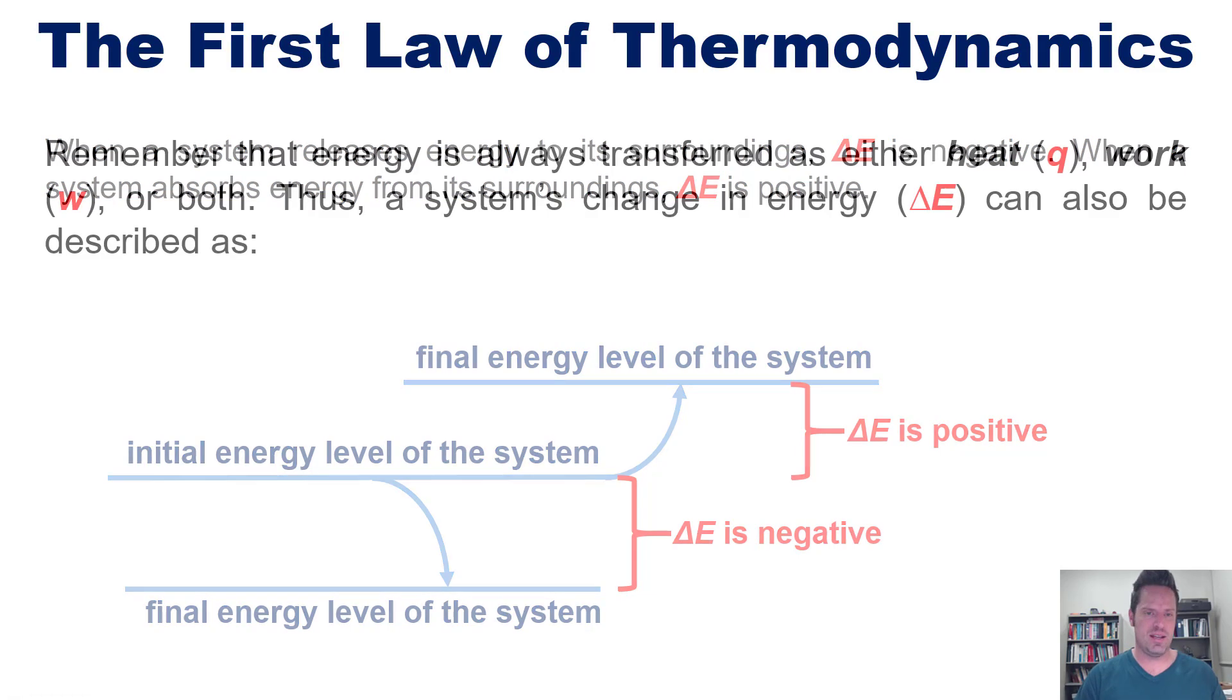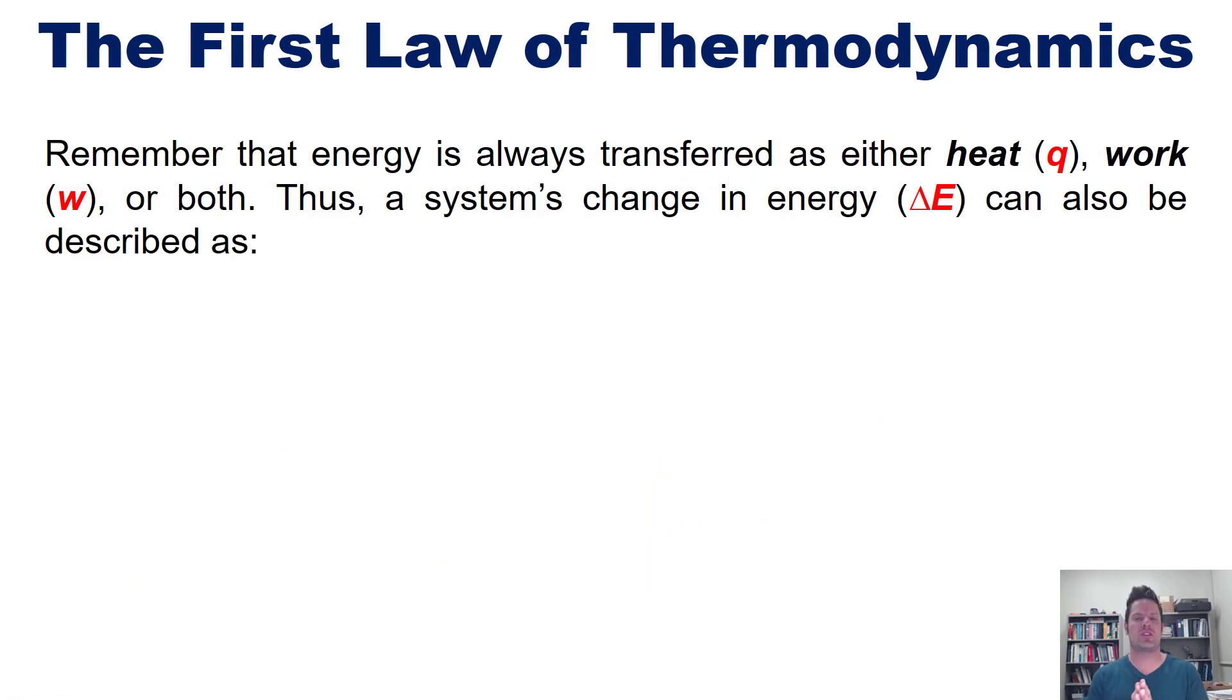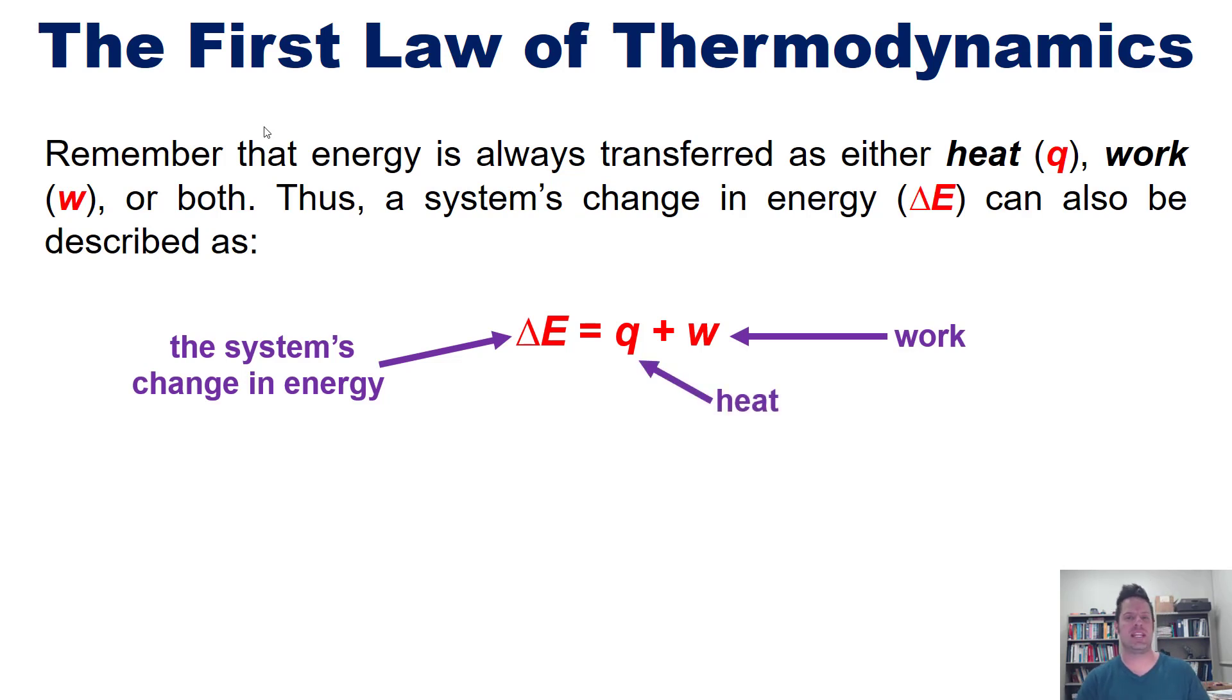Please remember then that energy is always transferred as either heat, abbreviated with the letter Q, work, abbreviated with the letter W, or both. Thus, a system's change in energy or delta E can also be described as Q plus W, heat plus work, where delta E is the change in the system's total energy state from the beginning of the process to the end. W is equal to work, and Q is an abbreviation for heat.